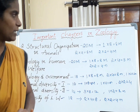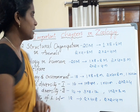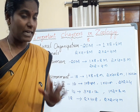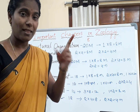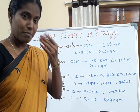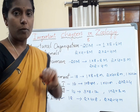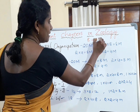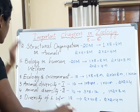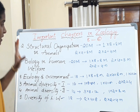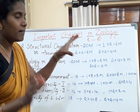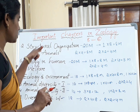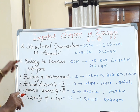In zoology, total eight chapters are there — eight units. Out of those, two were deleted. Those deleted chapters are locomotion and reproduction. So we have six chapters remaining to study.